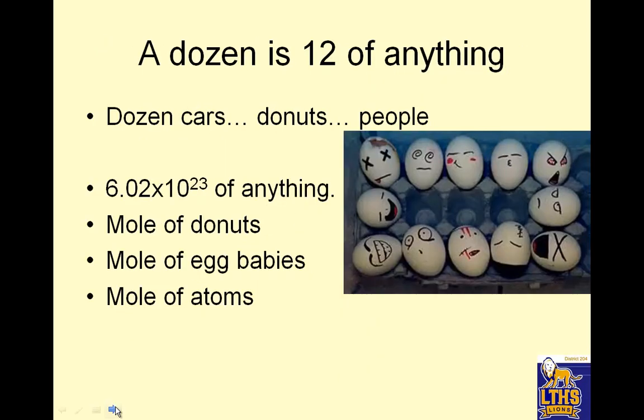A dozen is 12 of anything. It could be a dozen cars, a dozen donuts, or a dozen people. 6.02 times 10 to the 23rd of anything is a mole. A dozen cars is 12 cars, a dozen donuts is 12 donuts. A mole of donuts is 6.02 times 10 to the 23rd donuts. A mole of egg babies is 6.02 times 10 to the 23rd egg babies. A mole of atoms is 6.02 times 10 to the 23rd atoms. This only makes sense for atoms as a unit choice because atoms are so small.